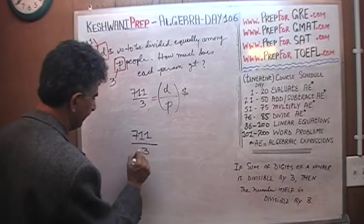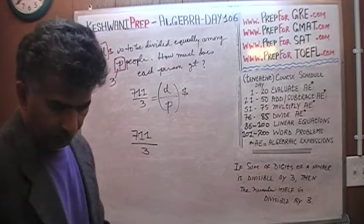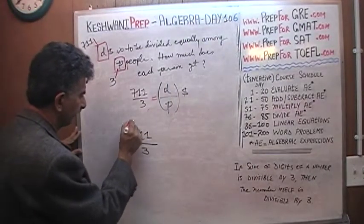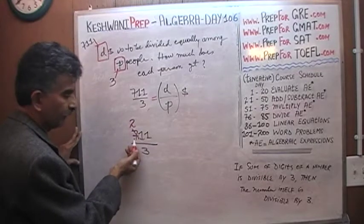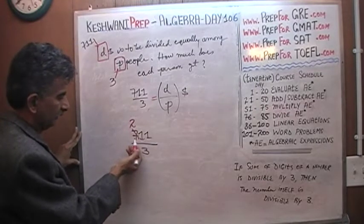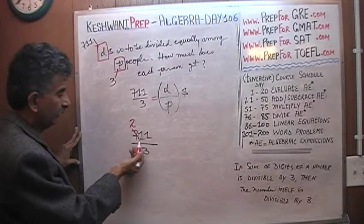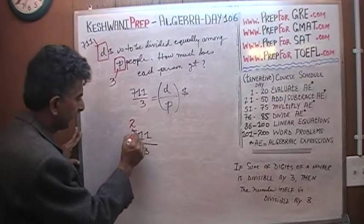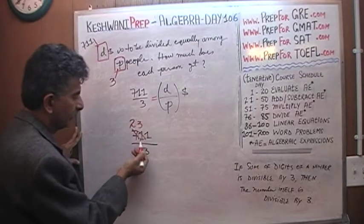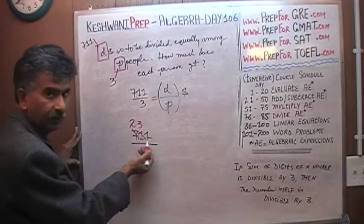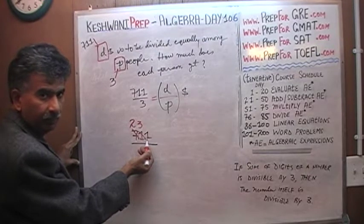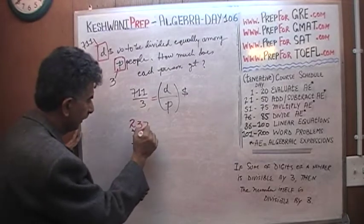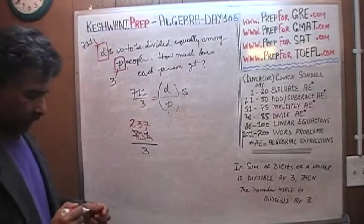711 divided by 3. How many 3's in the 7? 7 has 2 threes. The remaining one goes and joins this guy and becomes 11. This one goes and joins this guy and becomes 11. How many 3's in 11? There are 3 threes in 11, because 3 threes are 9. The remaining 2 goes and joins this guy, becomes 21.